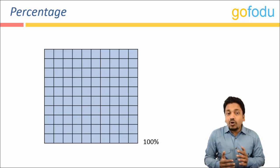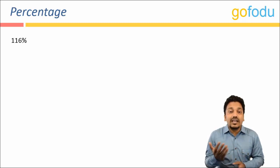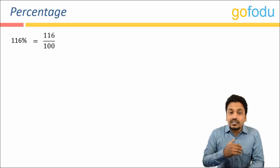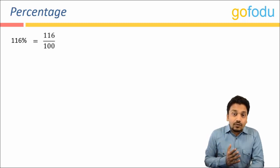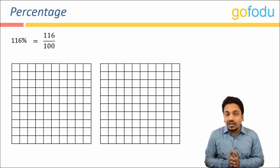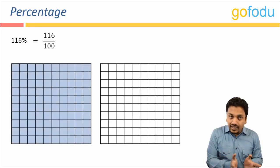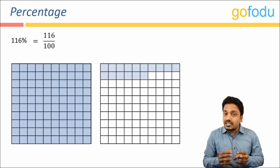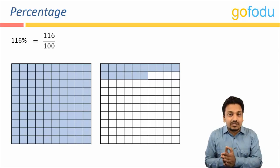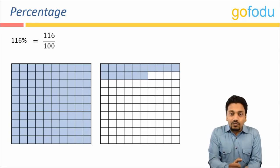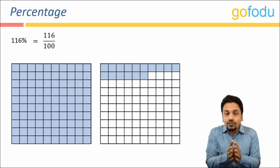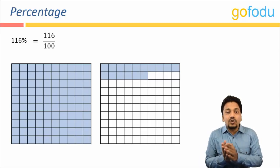So what if I talk about hundred and sixteen percent? What does that mean? Hundred and sixteen percent simply means hundred and sixteen parts out of hundred. So if I have two such cakes and divide both of them into hundred equal parts, hundred percent would mean one full cake and sixteen percent would be sixteen parts out of hundred. So the colored region representing one full cake plus sixteen parts would be hundred and sixteen percent.